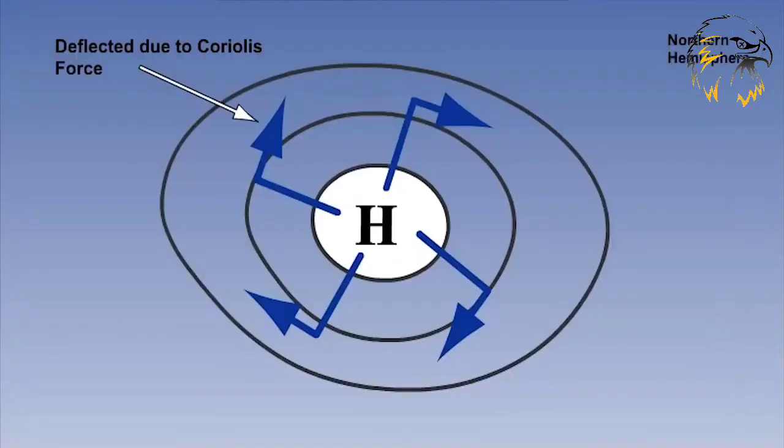The movement of air within an anticyclone is also of huge importance to aviation. We already mentioned that air is descending at the centre of an anticyclone and then diverges outwards along the surface.